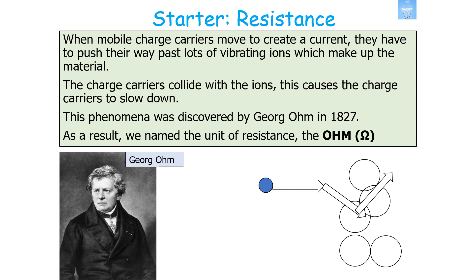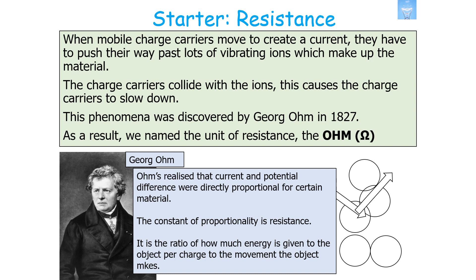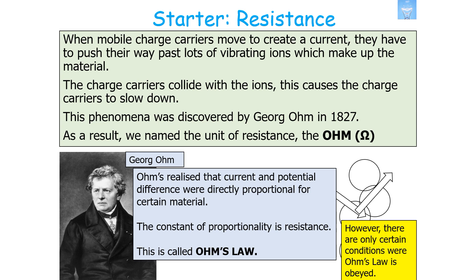When mobile charge carriers move to create a current, they push past lots of vibrating ions which make up the material, colliding with them and slowing down. This is the idea of resistance, discovered by Georges Ohm in 1827, and so the unit of resistance is named after him: the Ohm. Ohm realized that current and potential difference are directly proportional for certain materials, and that the constant of proportionality is the resistance. This direct proportionality is called Ohm's law, though it only applies under certain conditions.